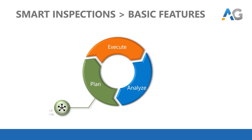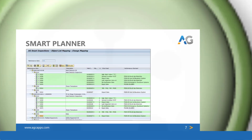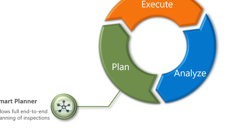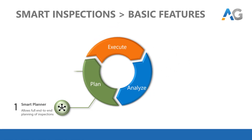The first feature is Smart Planner. Smart Planner allows you to plan your inspections in line with your maintenance strategies. It works harmoniously with preventive maintenance concepts in SAP Plant Maintenance, such as maintenance plans, object lists, deadline monitoring, work orders, task lists and everything else.